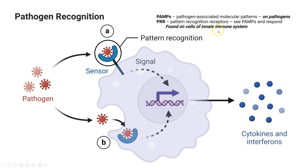On our innate immune cells, we have pattern recognition receptors, or PRRs — for example, a toll-like receptor. These pattern recognition receptors do just what they say: they recognize the pattern on our microbes. When a microbe binds a pattern recognition receptor on an innate immune cell like a macrophage, it's going to respond. That sends a signal to the cell nucleus saying we need to make some cytokines and tell the body that this pathogen is here. At the same time, that can signal phagocytosis — engulfment of that microbe — so it can be broken down and removed from the system.